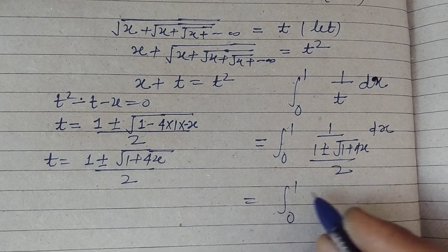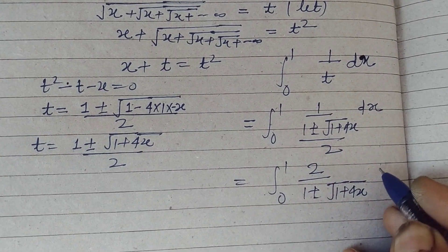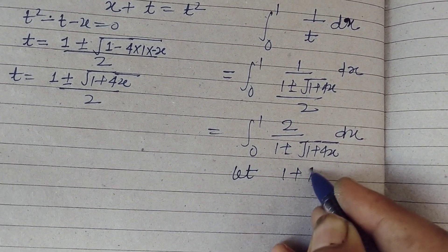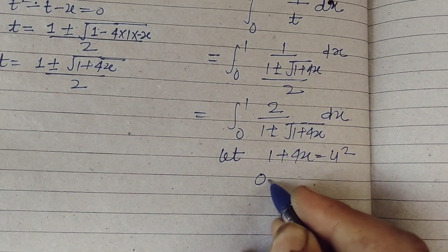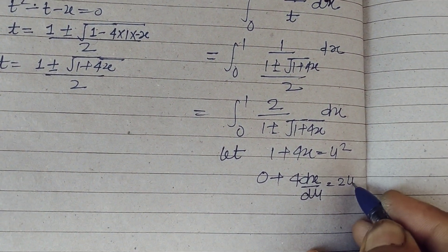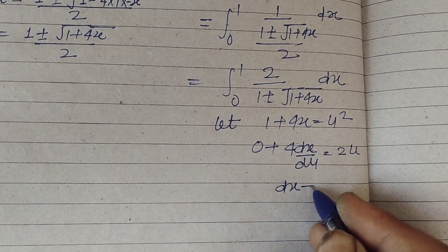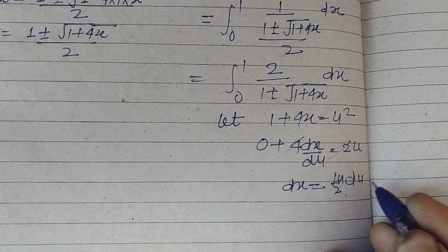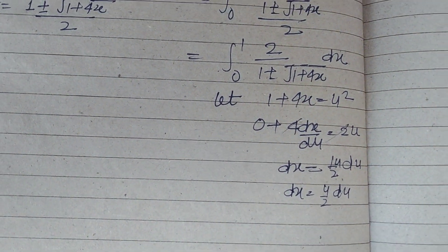So this becomes zero to one, two upon one plus minus root of one plus 4x, dx. Now let one plus 4x equal to u square. Differentiating, zero plus 4, dx upon du equal to 2u. So dx equal to u by 2 du.